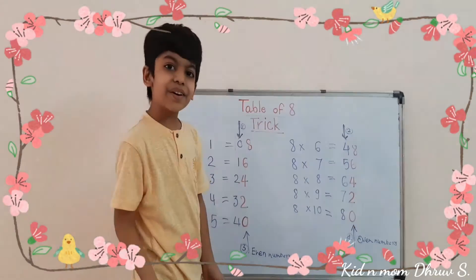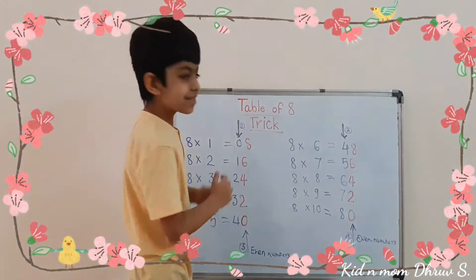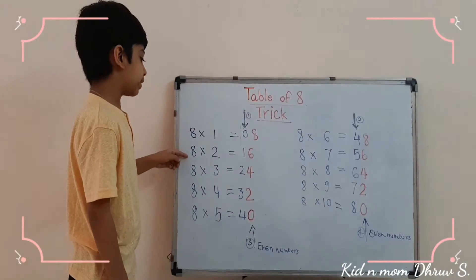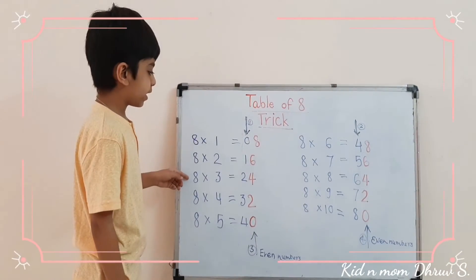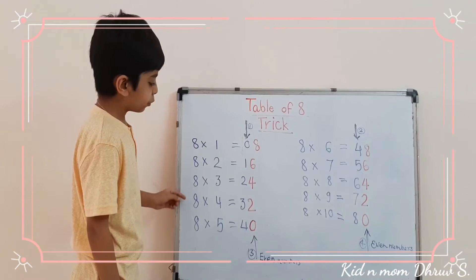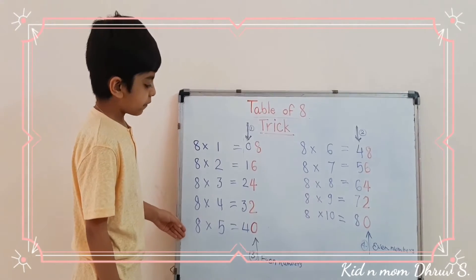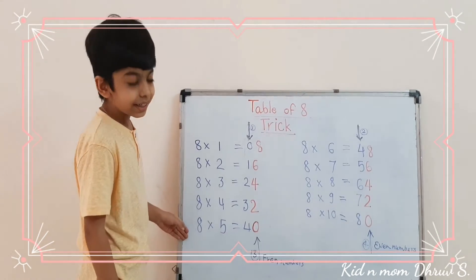And now you got the answer. 8 times 1 is 8. 8 times 2 is 16. 8 times 3 is 24. 8 times 4 is 32. 8 times 5 is 40.